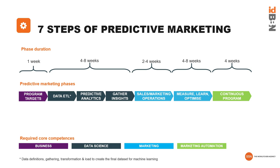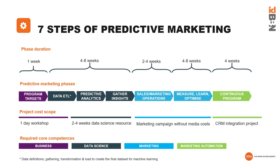To give some sense of project scope and cost, I've made analogies to familiar processes. Program targets: a one-day workshop in terms of cost and resources. The data science part: two to four weeks of data science resource. The marketing part: basically a traditional marketing campaign operation without media costs. A continuous program would be comparable to a CRM integration project.